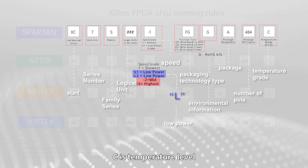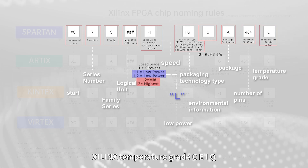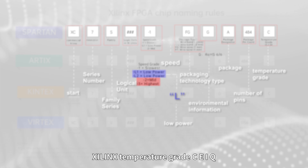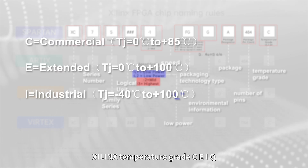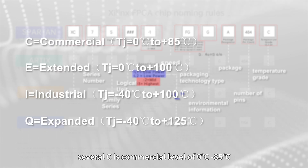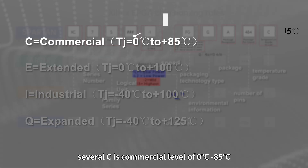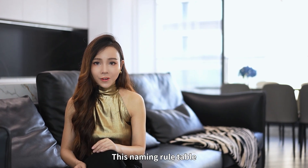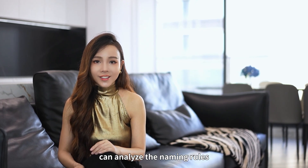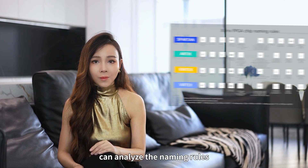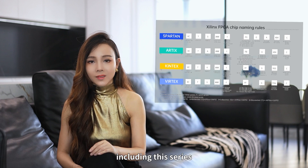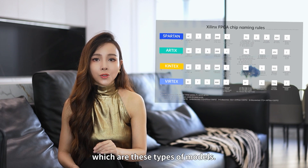'C' is the temperature grade. Xilinx temperature grades include C, E, I, and Q. 'C' stands for commercial level, which is 0 to 85 degrees Celsius. This naming rule can be applied to analyze the full series of Xilinx devices, including this series.